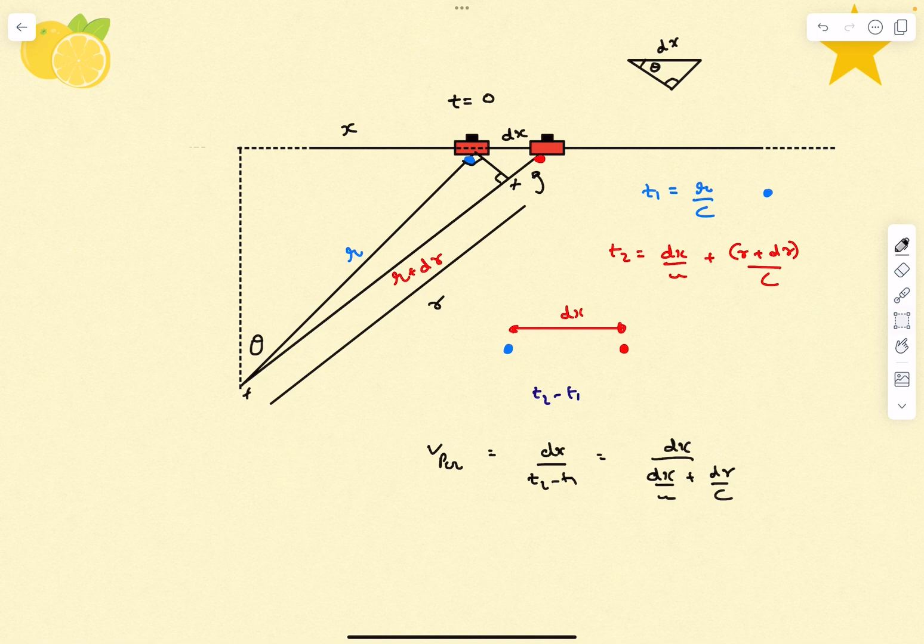If I consider this small differential triangle, this distance is dx. This angle is going to be θ because the angle with the vertical is θ, so the normal makes an angle of θ with the horizontal.